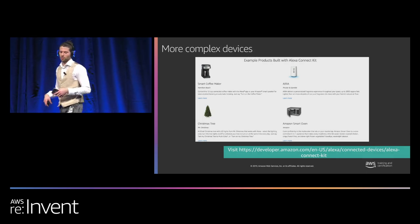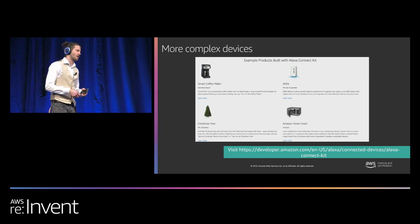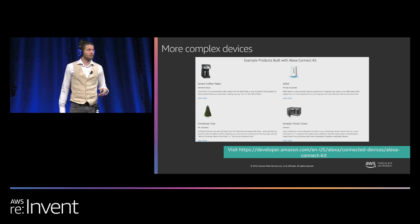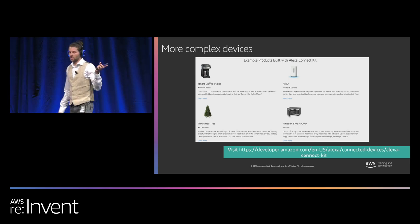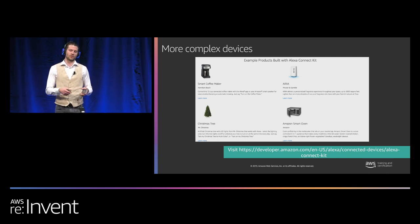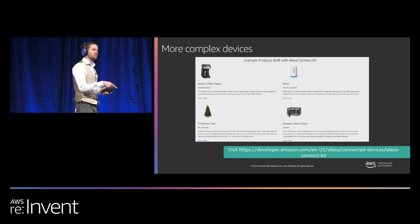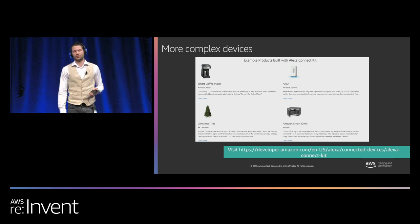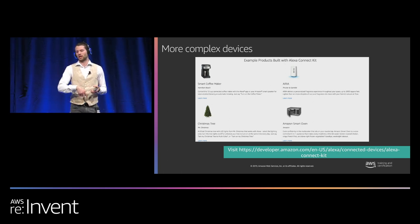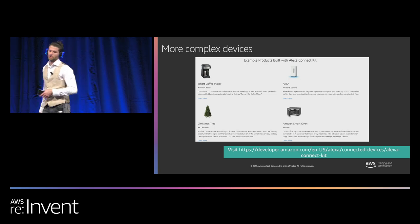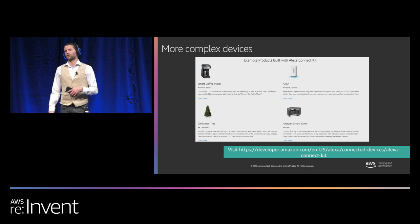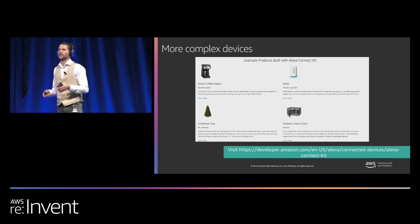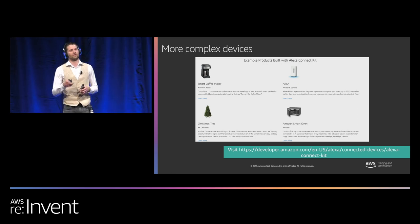That was a very simple example of turning a light on and off. But extending the functionality to an air freshener, a coffee machine, or a smart oven, you get extra capabilities depending on the device. The Christmas tree example supported range controller and brightness controller. The smart oven has capabilities that control temperature controller, time controller, and preset controller. The air freshener and all of them also support power control. These are four examples launched today on Alexa Connect Kit — much more than just turning things on and off.